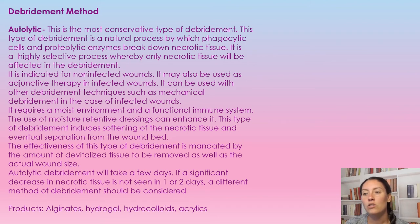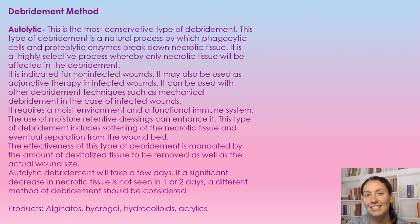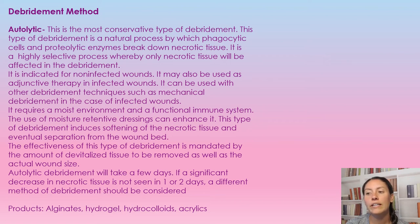Autolytic debridement does take a few days. If you see a significant decrease in necrotic tissue within one to two days, you should be choosing a different method. The products used include alginates, hydrogels, hydrocolloids, and acrylics — these all help support autolytic debridement.